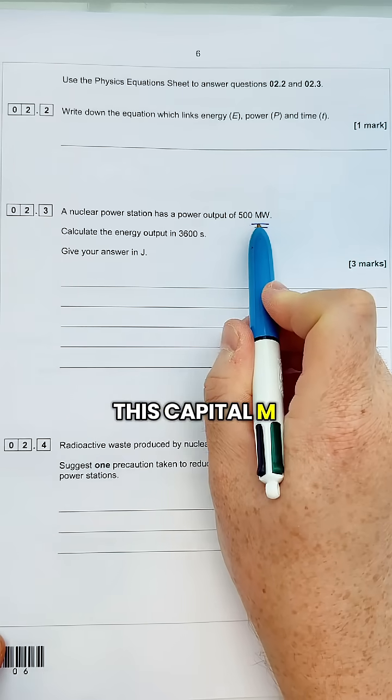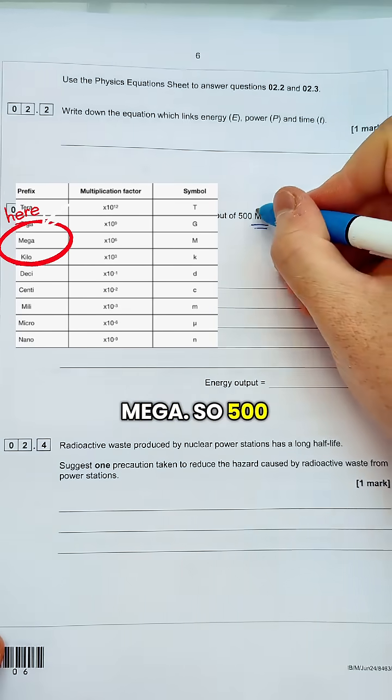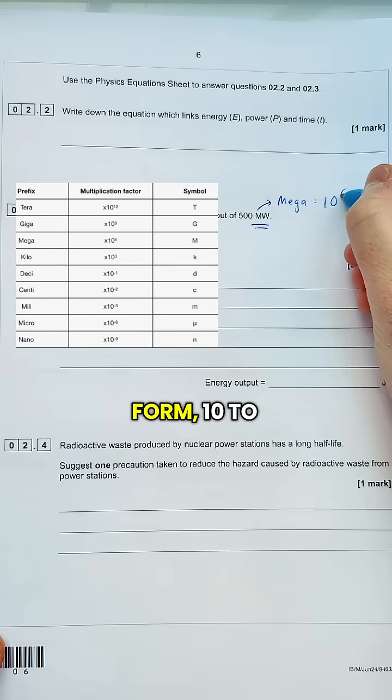So what does this capital M stand for? Here's the list of prefixes you need to know. This one is mega. So 500 megawatts is 500 million watts, or in standard form, 10 to the power of 6.